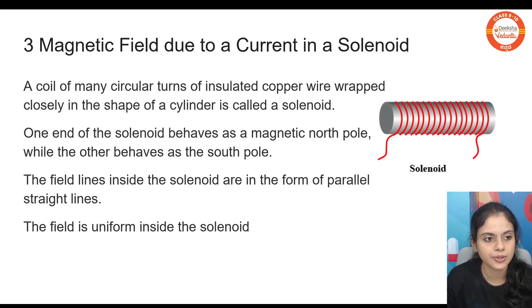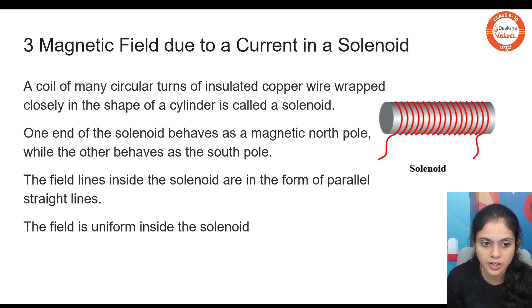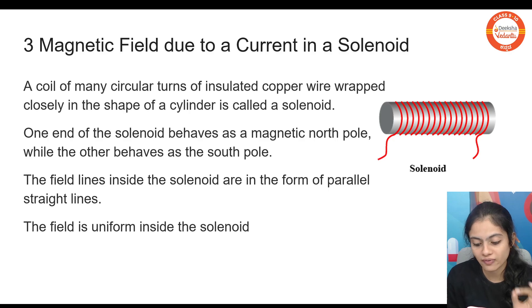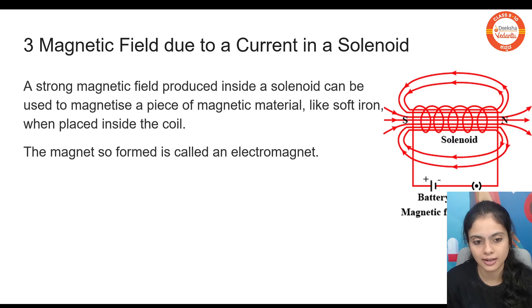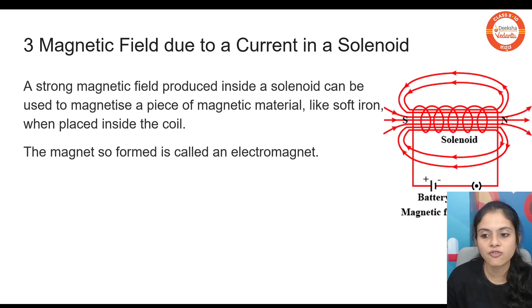Moving forward, we come across the solenoid. A solenoid is a structure in which an insulated copper wire is wrapped closely in a cylindrical shape. You can consider it to be many multiple circular loops together. When we connect the solenoid with a battery, current flows through it, and the magnetic field of the solenoid will be similar to the magnetic field of a bar magnet — one end behaves as a south pole and the other end behaves as a north pole.